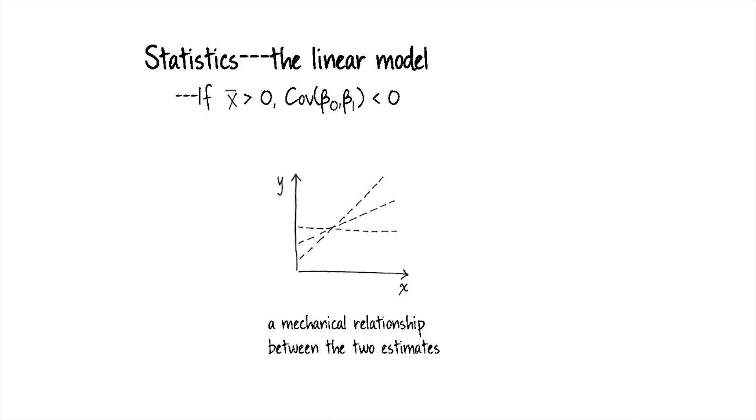And then finally, there's this mechanical relationship between the two estimates. If the mean of our x's is positive, then if we overestimate the intercept of the line, we're going to underestimate the slope. An overestimate of the intercept is associated with an underestimate of the slope, and an underestimate of the intercept is associated with an overestimate of the slope. It's just this mechanical relationship. And if x̄ is negative, the mechanical relationship flips.